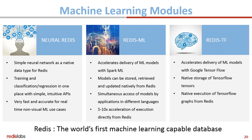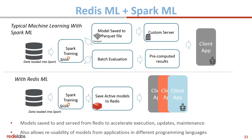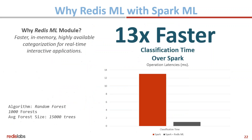A benchmark shows about a five to ten times acceleration of machine learning model execution when executed directly from Redis. Similarly, Redis TensorFlow accelerates the delivery of machine learning models generated using TensorFlow. With Redis ML and Spark ML: typical machine learning involves base data loaded into Spark for training, models saved and delivered via a custom server to the client application. With Redis ML, models generated from Spark can be directly stored in Redis, updated on the fly, and accessed by client applications in many different languages — resulting in 13 times faster classification time over Spark.